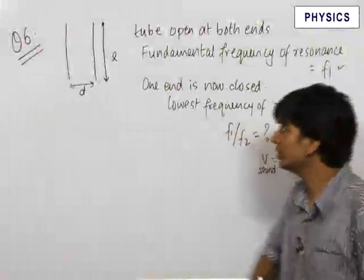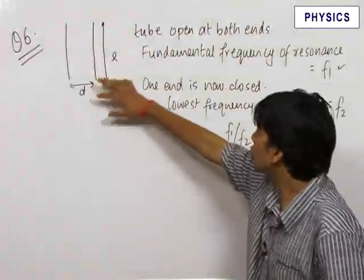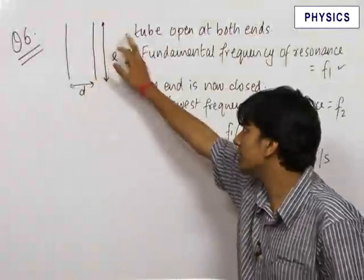The sixth question is a very important question. We have been given a tube which is open at both ends, and the diameter of the tube and the length of the tube are given.